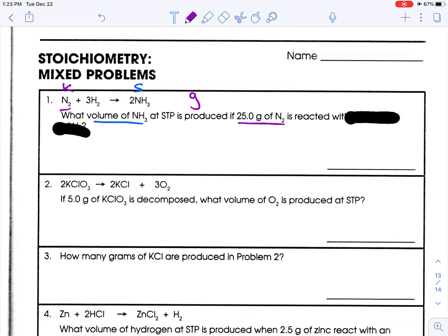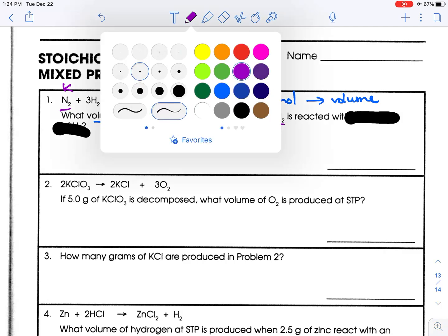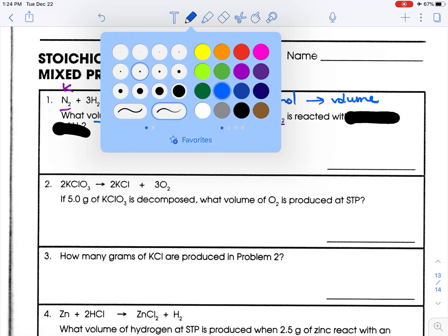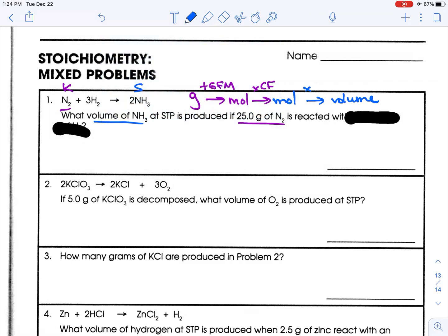So let's think of a game plan here. We have grams, and we need to go to volume. So I'm going to go from grams to moles, then from moles of one thing to moles of another, and then to volume. To go from grams to moles, we're going to divide by GFM. To go from moles of one thing to moles of another, we're going to multiply by the conversion factor. And to go from moles to volume, we're going to multiply by 22.4 liters, because it is at STP.